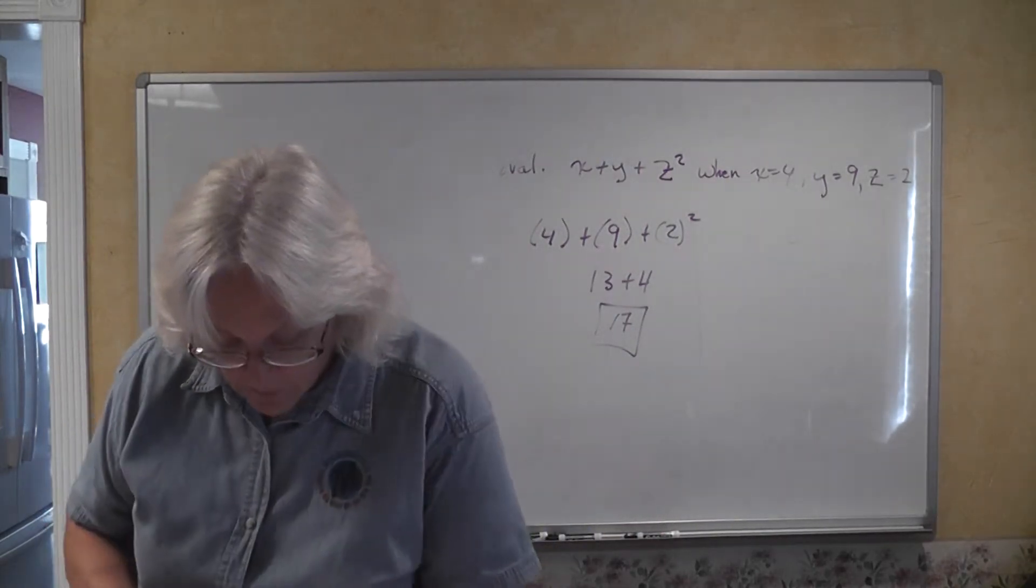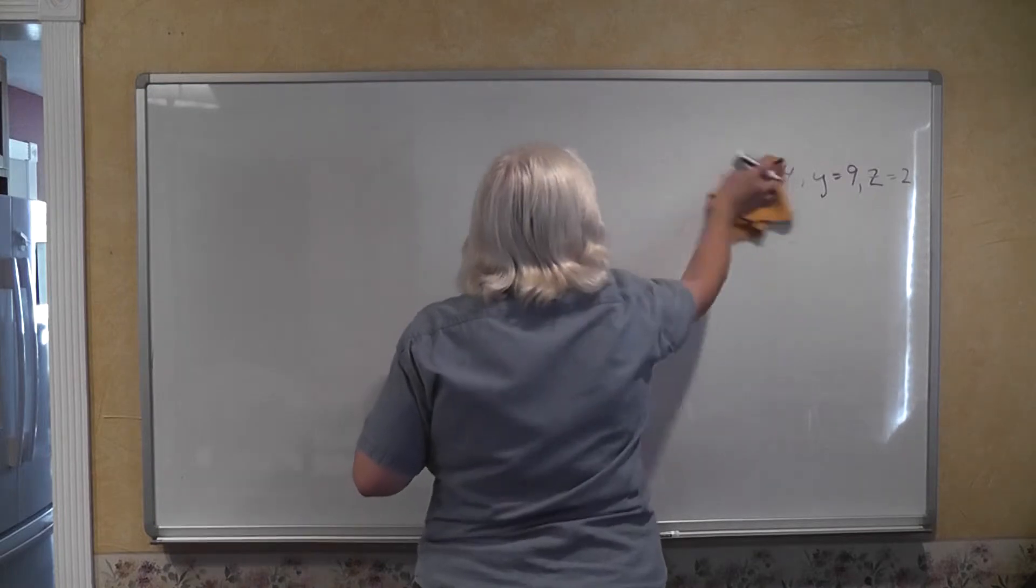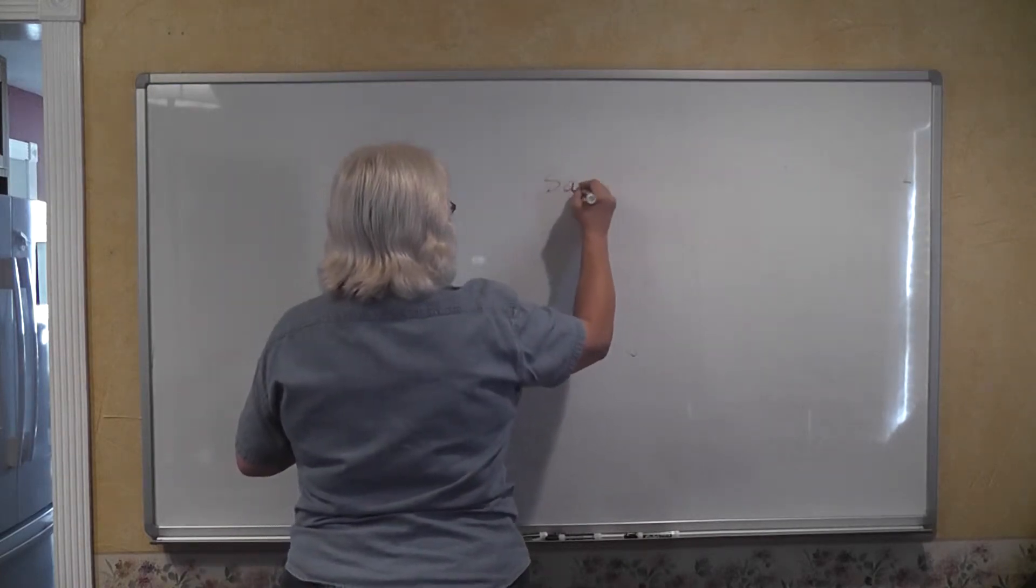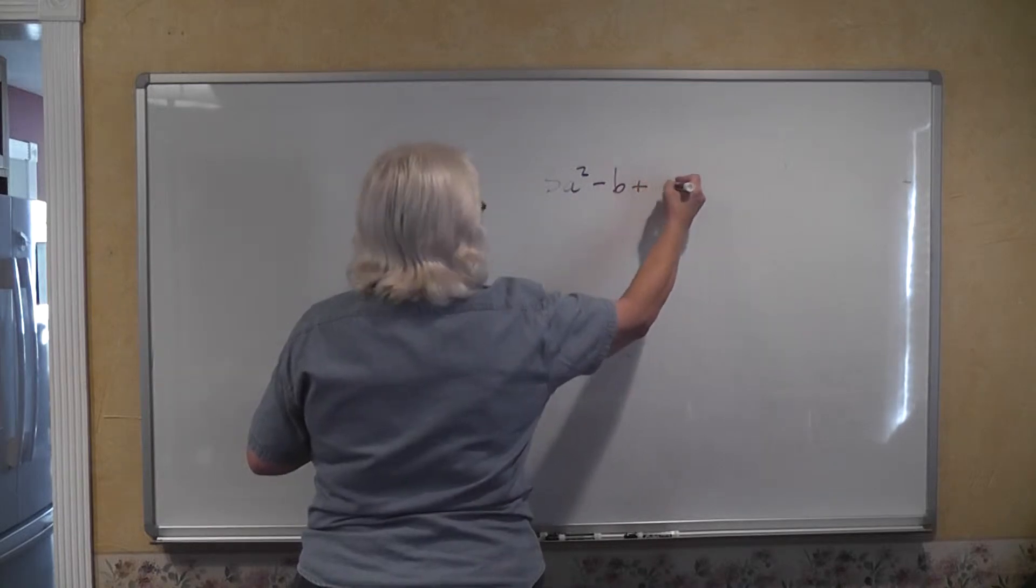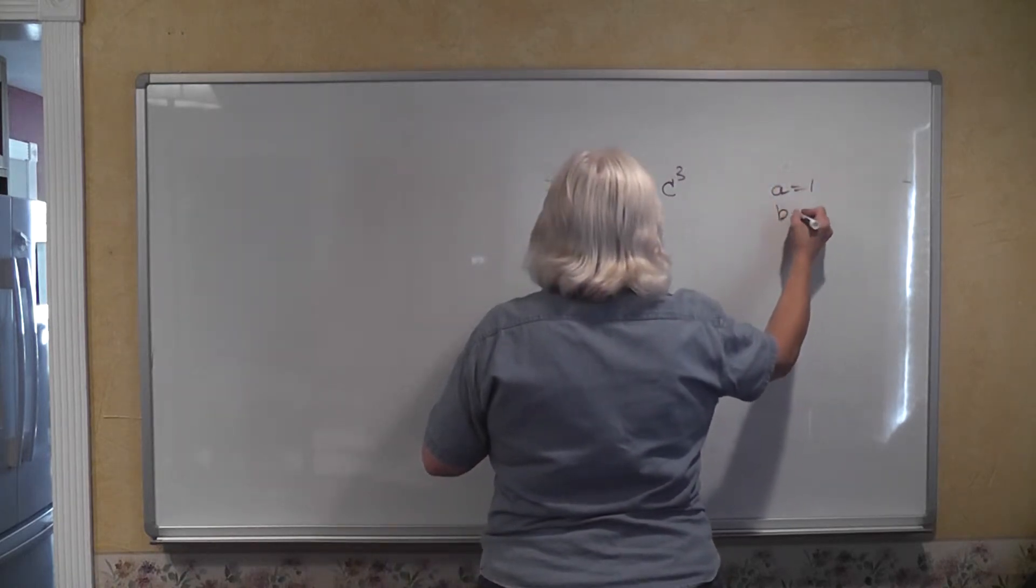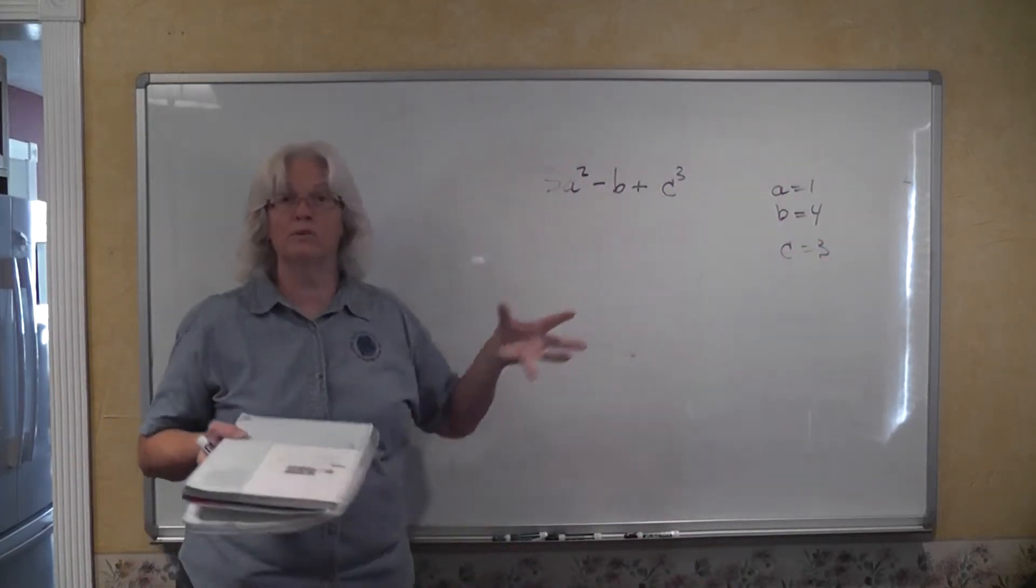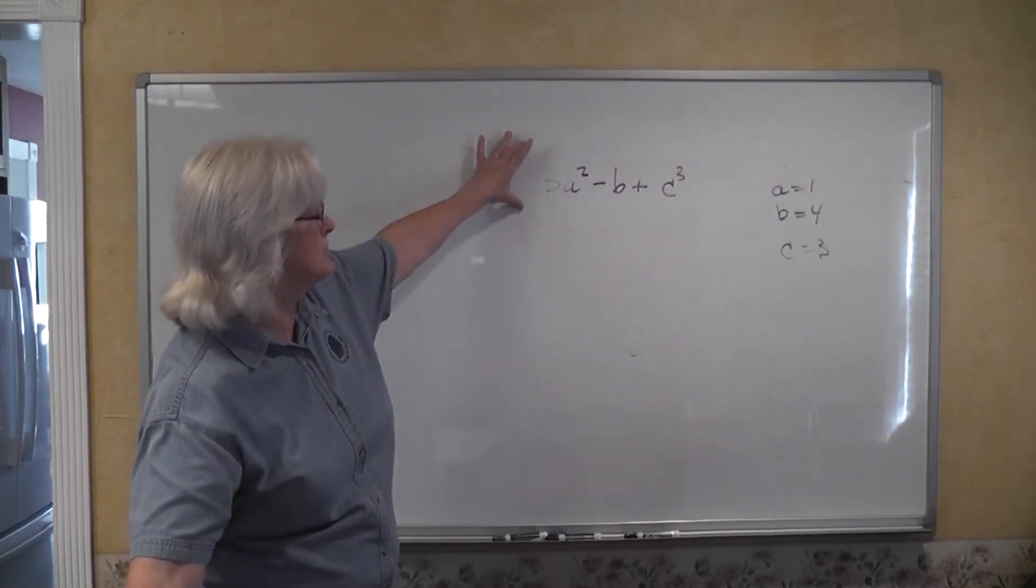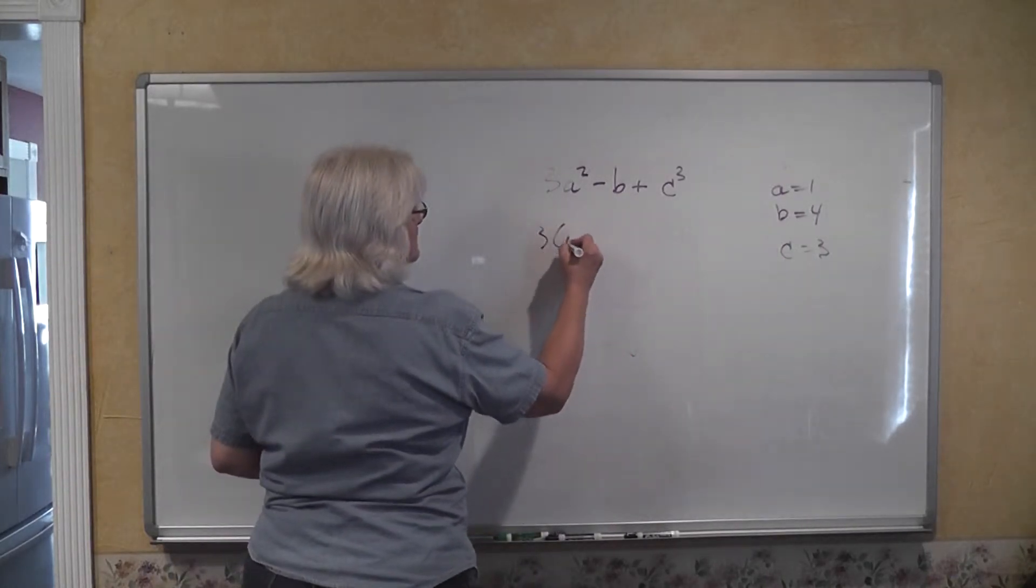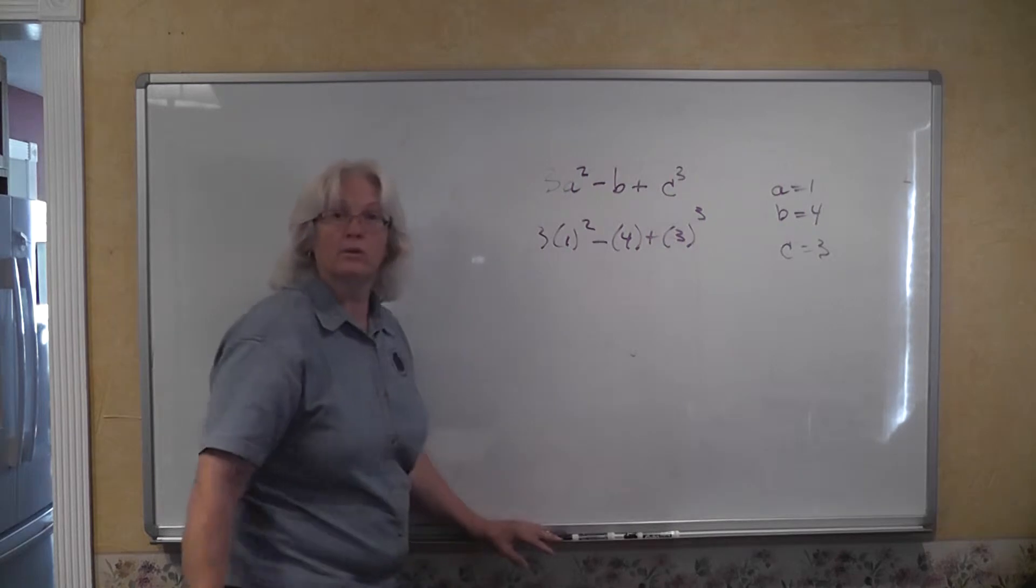Alright, example number 3. We have some subtraction and see what happens. We're going to evaluate 3a squared minus b plus c cubed when a is 1, b has a value of 4, and c is equal to 3. We want to substitute in to this original expression these values for the variables.